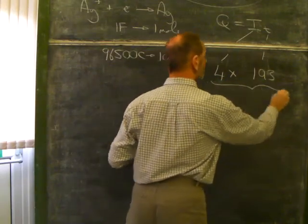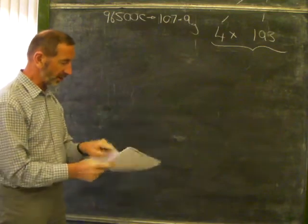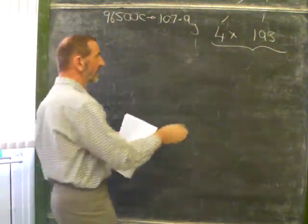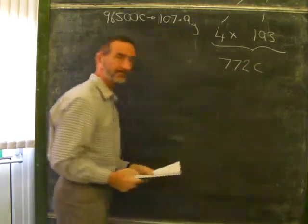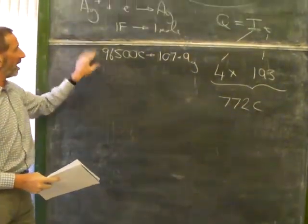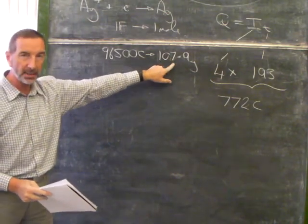So how much electricity are we dealing with here? How many coulombs? If we do the sum, we'll discover that this comes to 772 coulombs.